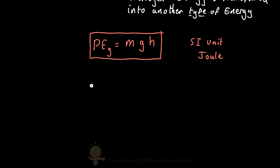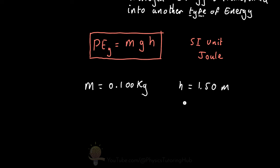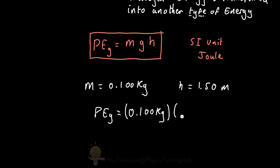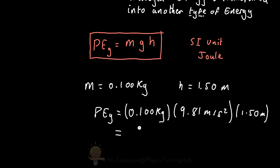So if our coffee cup has a mass of 100 grams, which is 0.100 kilograms, and we've dropped it from a height of 1.50 meters, what is the gravitational potential energy of this cup just before we drop it? Using this formula, the gravitational potential energy equals 0.100 kilograms multiplied by 9.81 meters per second squared multiplied by 1.5 meters. Multiplying this all together, we get a gravitational potential energy of 1.47 joules.